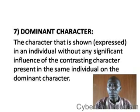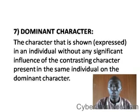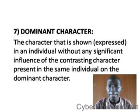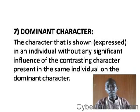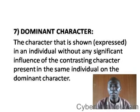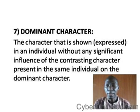Dominant character is shown in an individual without any significant influence of the contrasting character present in the same individual. For example, if you have a plant that looks very tall, that does not mean that all offspring of such plants will definitely be tall when planted. There could be a shortness character in it, but the dominant character for tallness is the one presently showing — that is why we say that tallness is dominant.